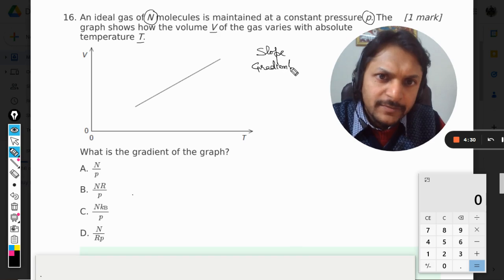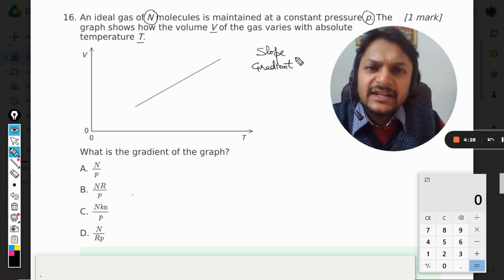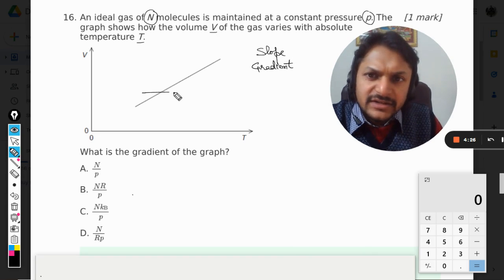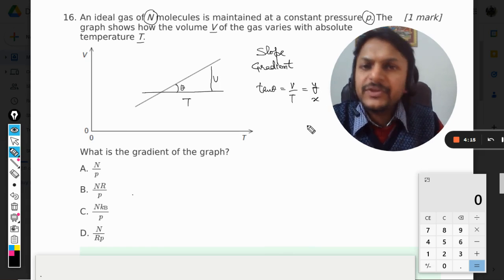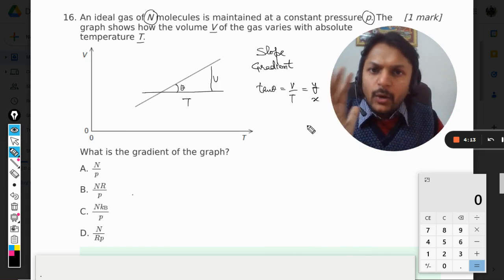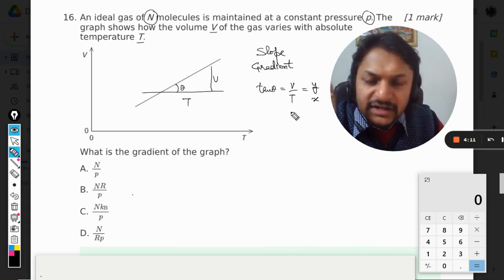This is basically the tan theta. So tan theta will be taken as V by T. You can call it tan theta, you can call it V by T, you can call it y by x, you can call it slope. Now we need to find the ratio V by T.